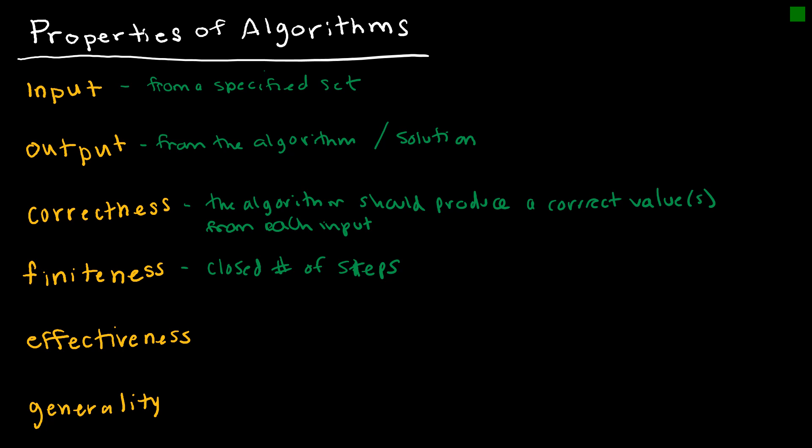Effectiveness. We want it to be obviously correct and also in a finite amount of time. And so when we talk about some of these algorithms, we will say this is an effective algorithm, but maybe it's not the most effective just because it takes a lot longer. And then generality should work for all problems of a specific form or of a desired form. So we should be able to use it for more than just the set we created it for.